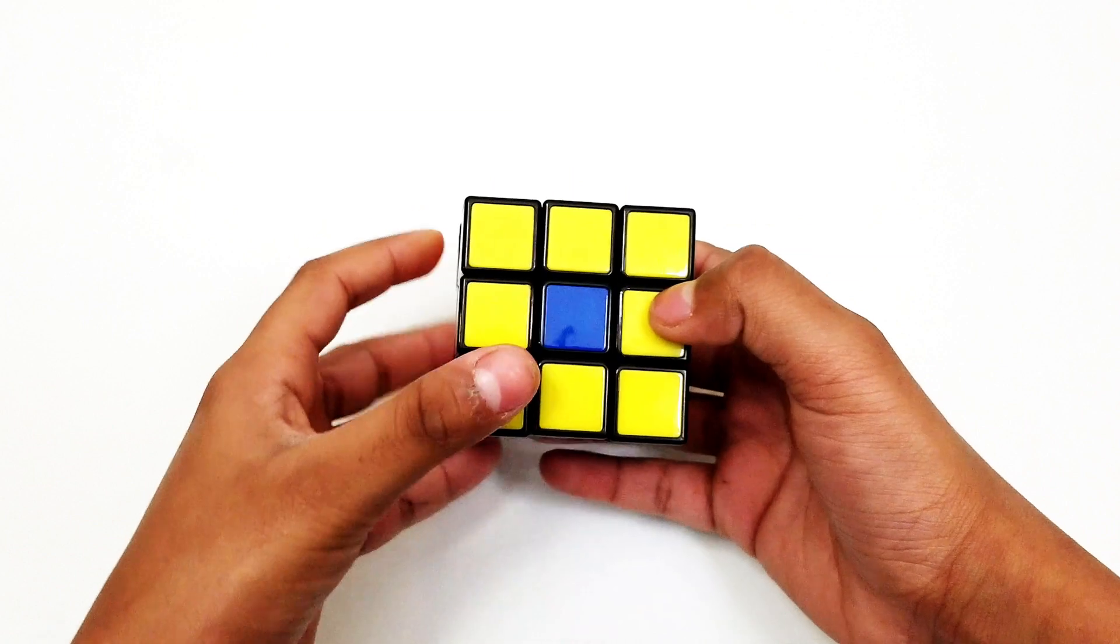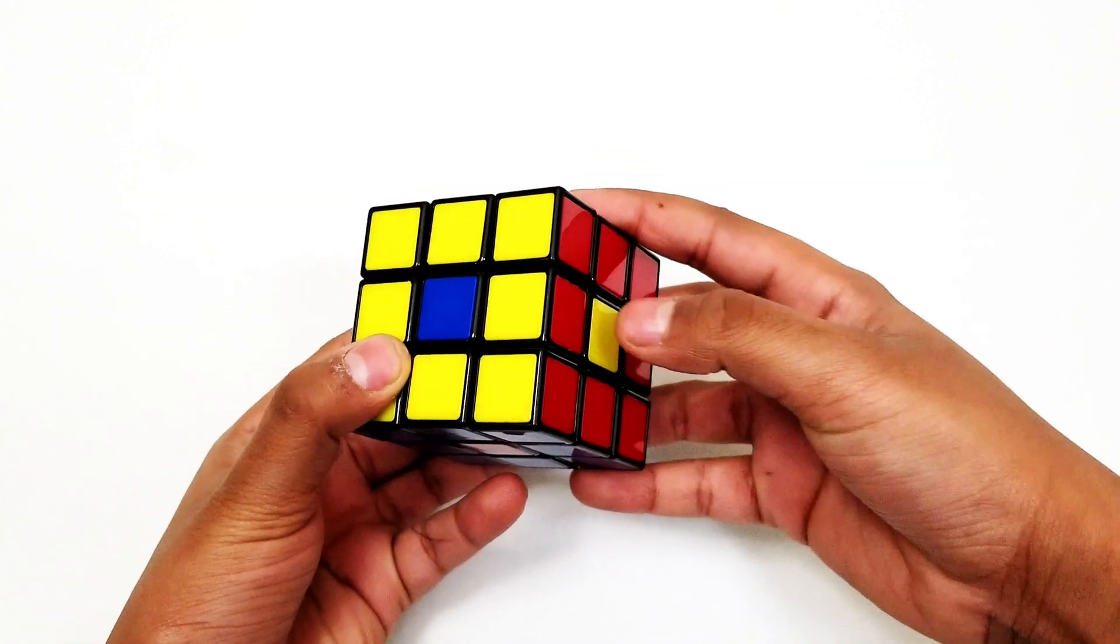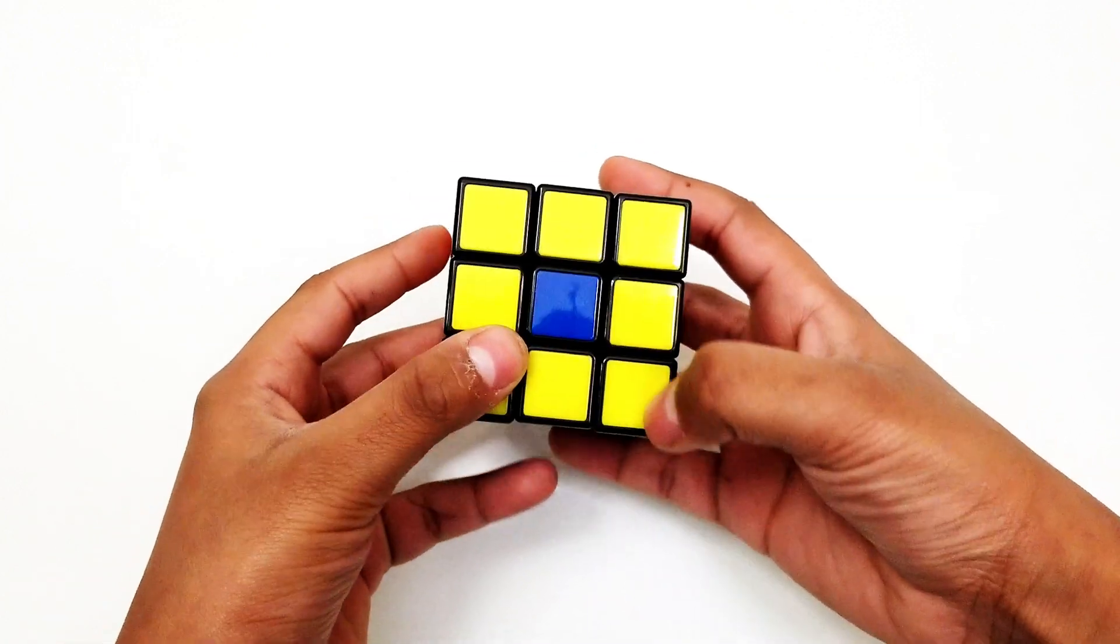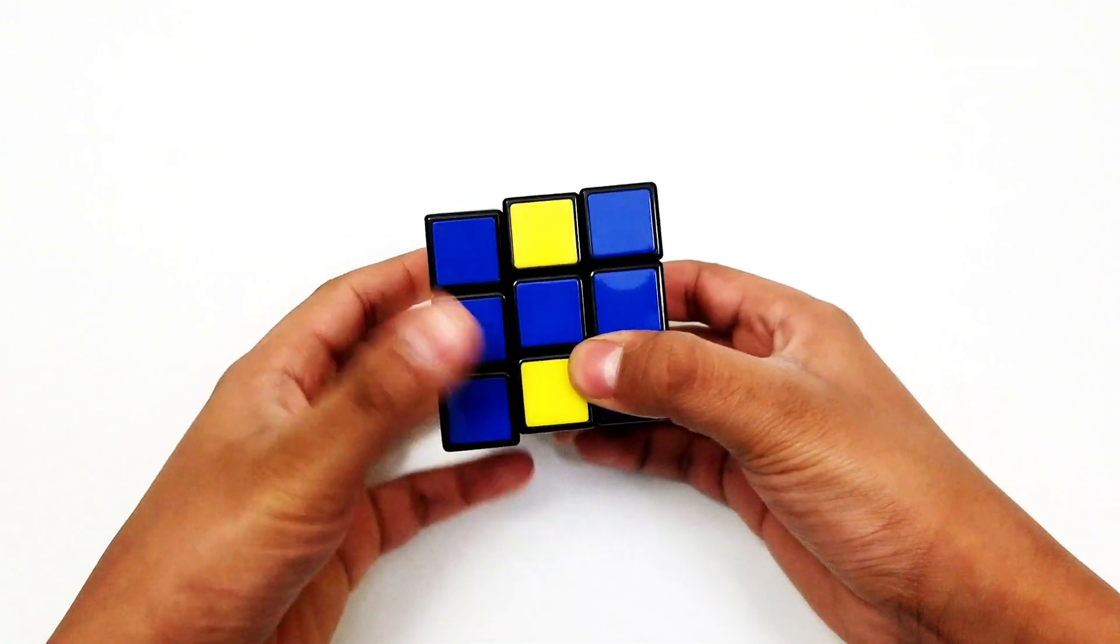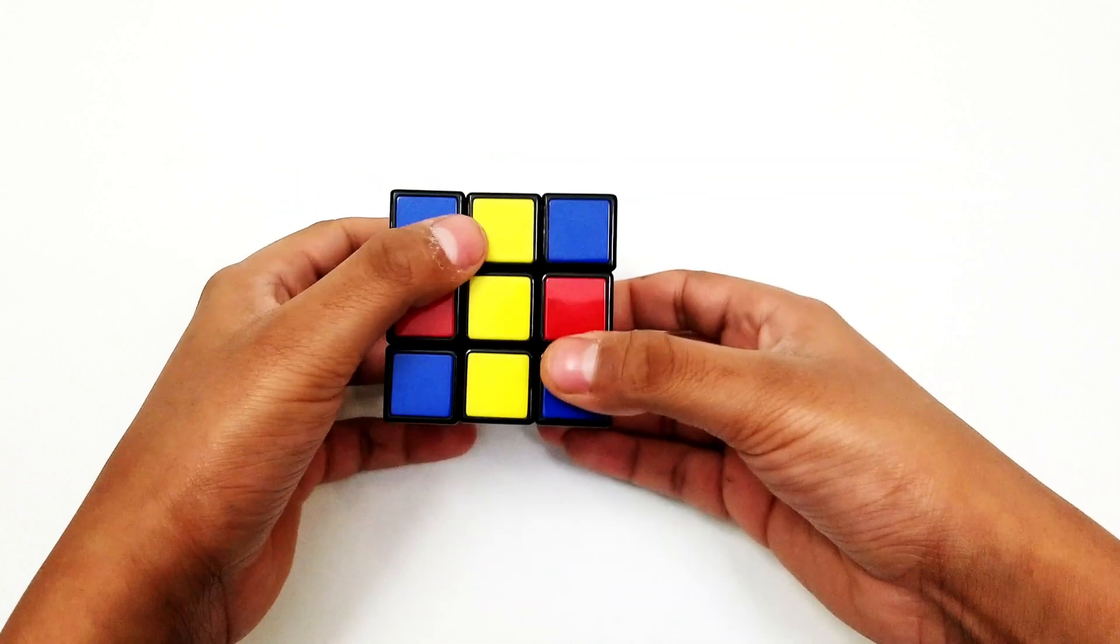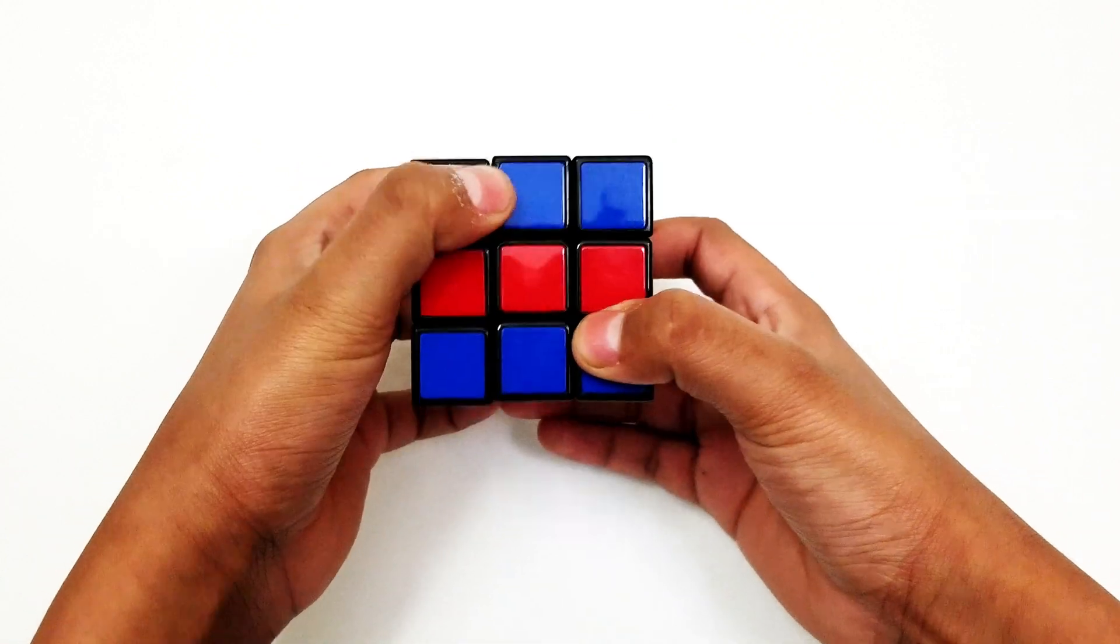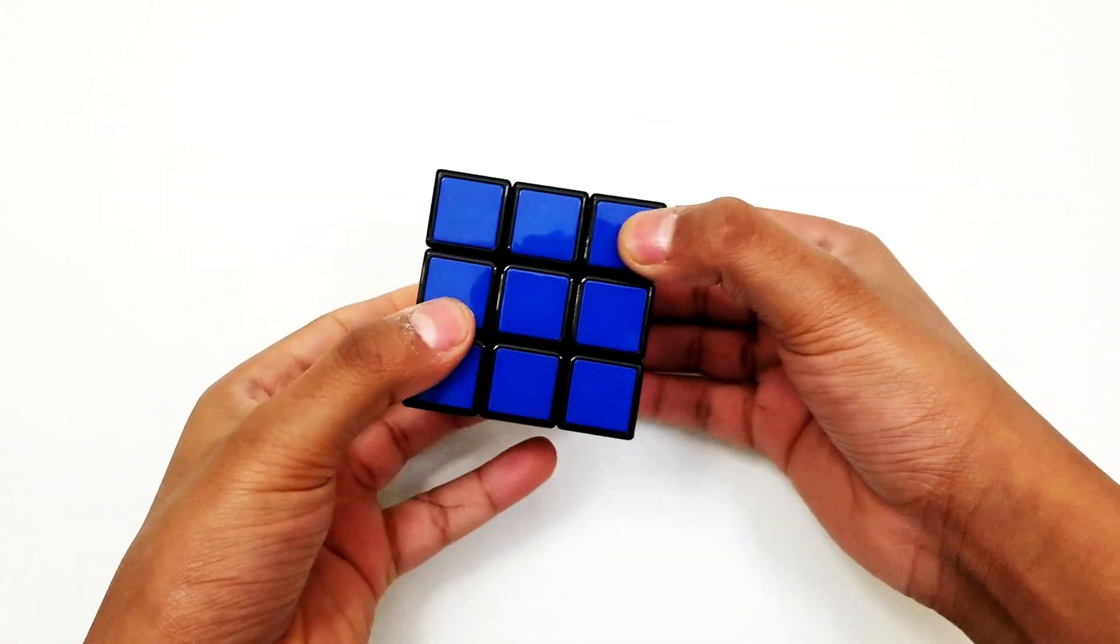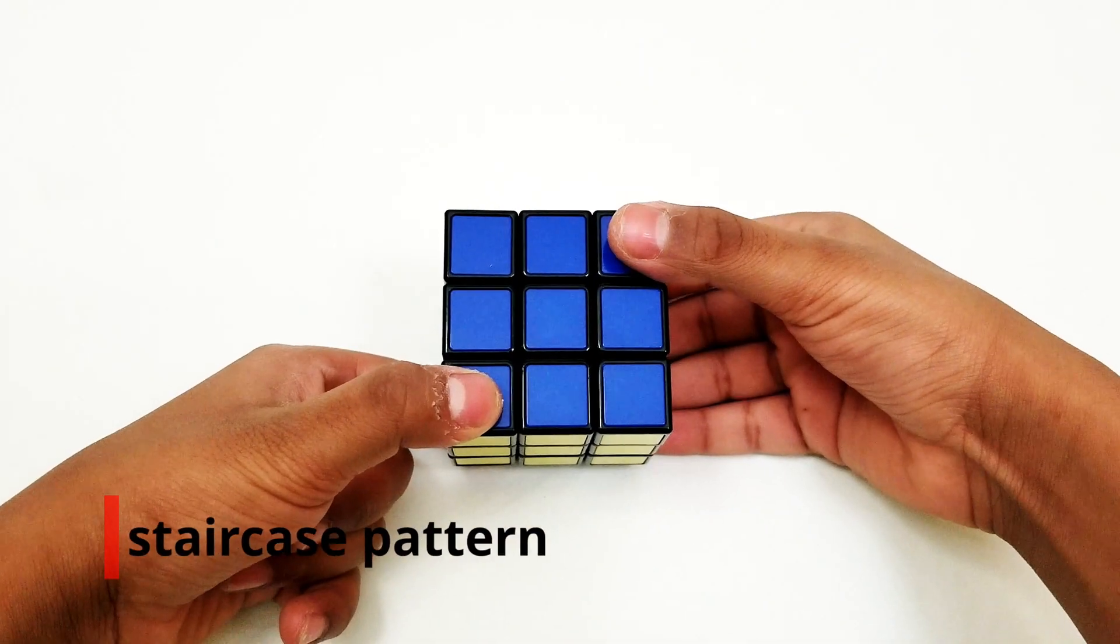Make the yellow petal facing you and the yellow dot on the right side of the petals. Lift up the left and right side, then turn the top and bottom to the right. Turn your cube to the left and push up the middle, and finally turn the middle to the right. Now let's move on to the staircase pattern.